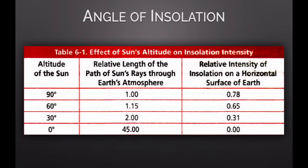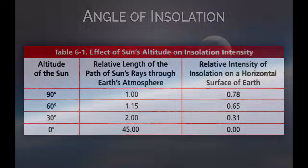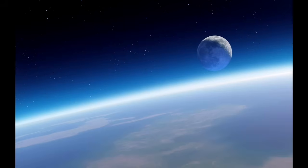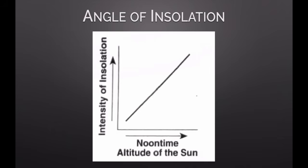Also included is how many layers of atmosphere the sunlight must pass through. The thickness of the atmosphere is affected by the curvature of the Earth. In this picture of our atmosphere, some areas are thicker than others due to Earth's curve. Sunlight coming in at 90 degrees passes through less atmospheric thickness, whereas sunlight at a lower angle passes through many more layers. The higher the angle, the less atmosphere it passes through. Overall, as you increase the altitude — the angle — of the sun, insolation intensity increases. It's a direct relationship.